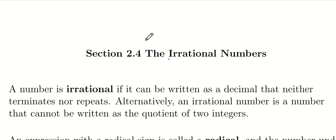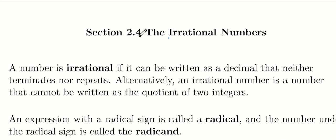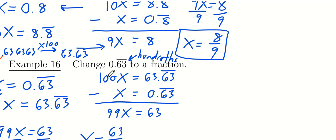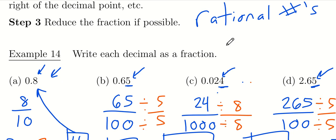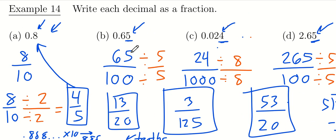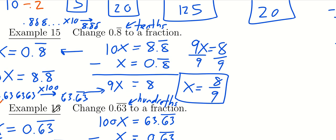In section 2.4, we cover irrational numbers. A number is irrational if it can be written as a decimal that neither stops nor repeats itself. Going back to our previous examples, all of those are rational numbers — a number is rational if its decimal expansion either stops or, if it doesn't stop, it repeats. The 0.8 repeating and 0.63 repeating from examples 15 and 16 are also rational because they are repeating decimals.